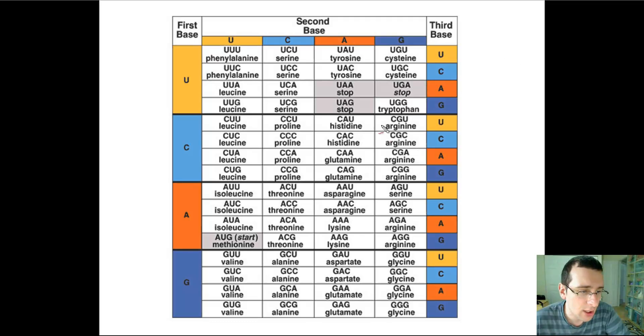Arginine will be coded by CG with any other ending. Whether it ends with U, C, A, or G, in all cases, it will be arginine. That's what we call the wobble, or the fact that there are multiple ways to spell each amino acid within the DNA code. But each code will only spell one amino acid, so the DNA code is specific, even if it is redundant.